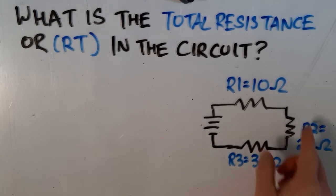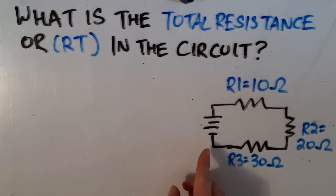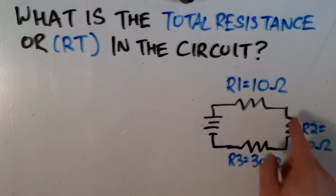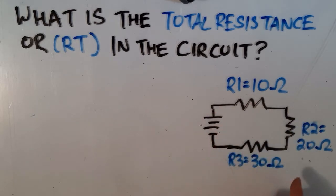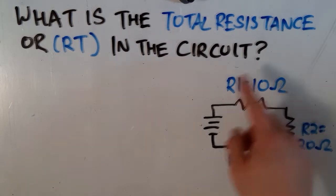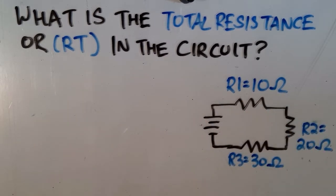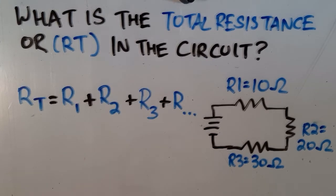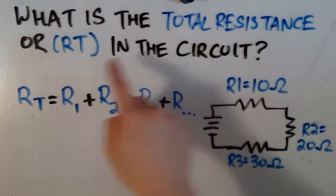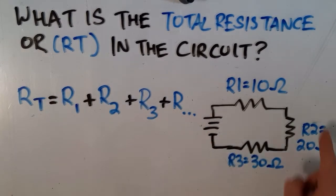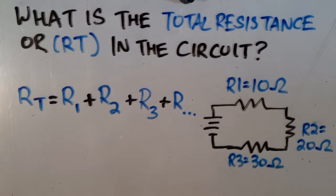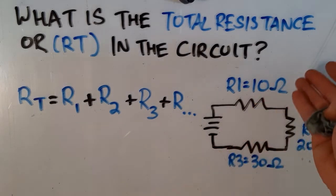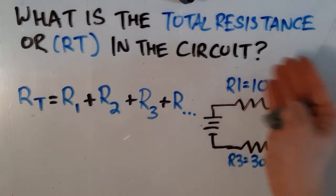If we look at our circuit, it is a series circuit because there's only one path for the electrons to flow through. Since there's only one path, the electrons must pass through each individual resistor — R1, R2, and R3. So if you're ever asked what is the total resistance, or RT, in a series circuit, all you need to do is add up the values of all the resistors in the circuit.